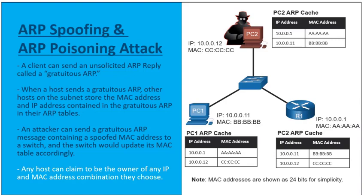A client can send an unsolicited ARP reply, which is known as a gratuitous ARP. It's really a broadcast that we have a specific IP address mapped to a specific MAC address. The problem is when someone sends out a gratuitous ARP as a broadcast, other devices — hosts as well as network switches — are going to store that MAC address and IP address combo in their ARP tables and MAC address tables.